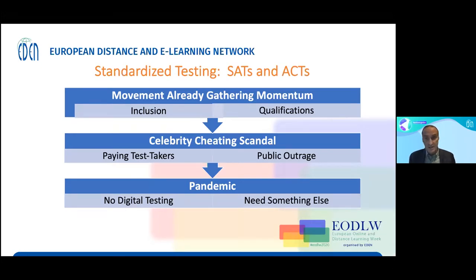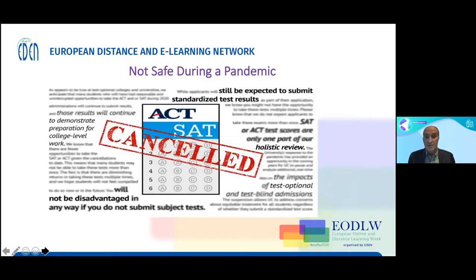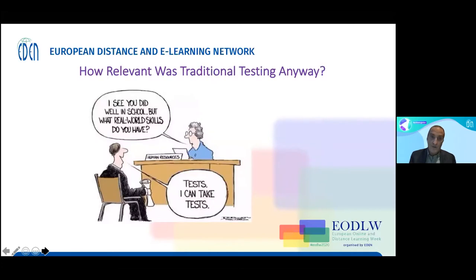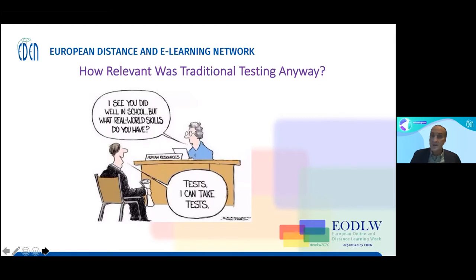All kinds of tests were canceled. Schools still needed a way of seeing what was going on. Not only were standardized tests already kind of broken, but all kinds of assessments moving forward — trying to do something as we moved online — there had to be some way of doing that. How relevant was traditional testing anyway? One of the things we'll be talking about is authentic assessment, which asks: what are students learning in schools and colleges that prepares them for the workforce so they can hit the ground running?